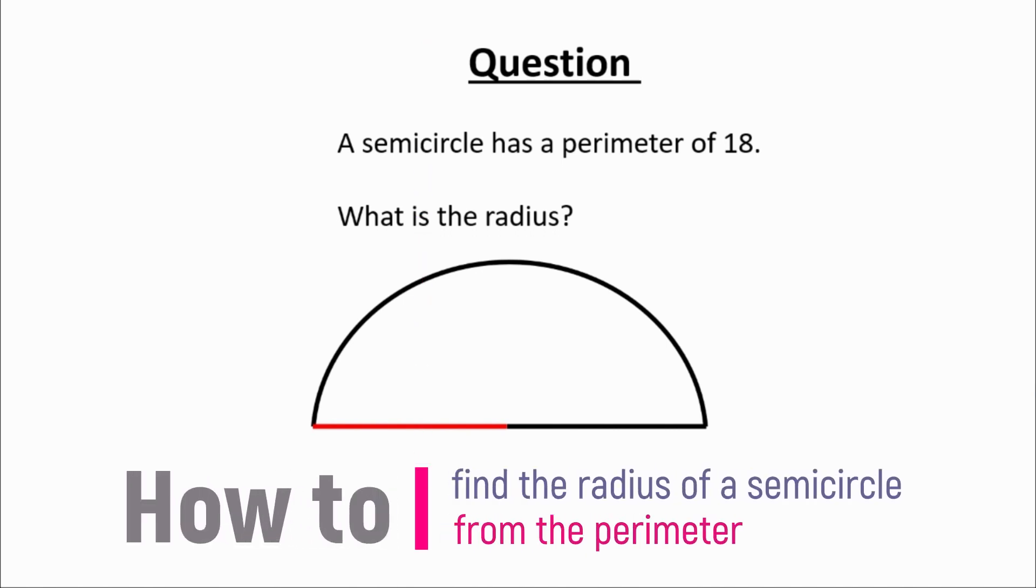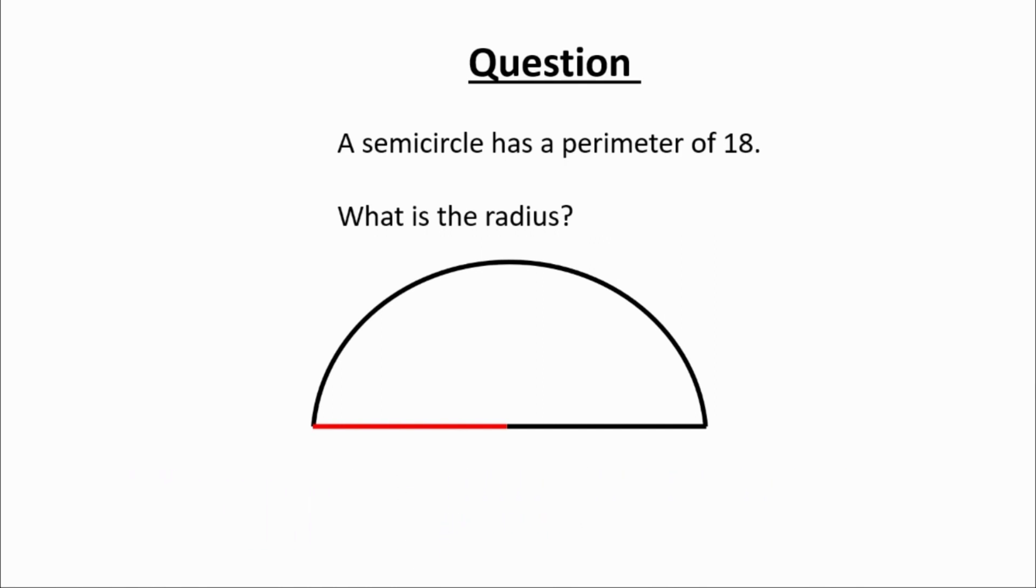In this short video I'm going to show you how you can find the radius of a semicircle using only the perimeter. So let's start by understanding the formula that you're going to use to solve this.